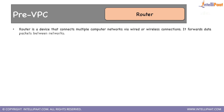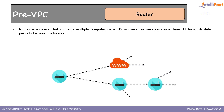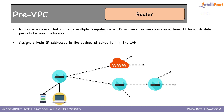There are thousands of routers around the world, and to communicate around the globe we need the service of all these routers. A router is a device that connects multiple computer networks via wired or wireless connections — it forwards data packets between networks. We have hundreds and thousands of routers around the world connected to each other, and collectively they provide us the internet. It assigns private IP addresses to the devices attached to it in the LAN, so devices behind the router get IP addresses like 192.168.2.6 or 192.168.2.10.